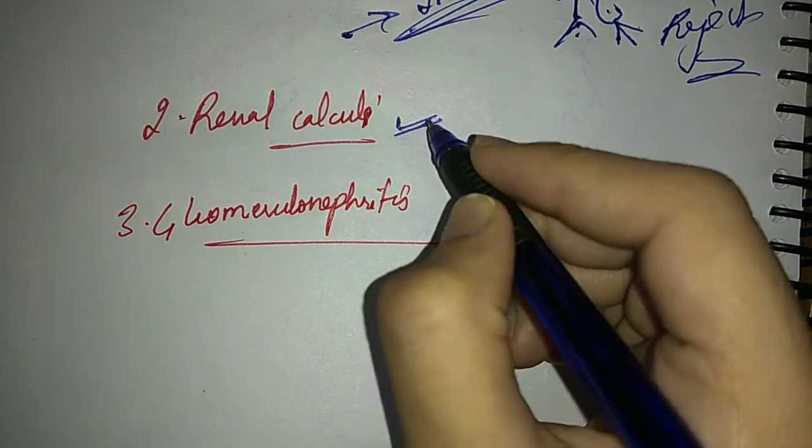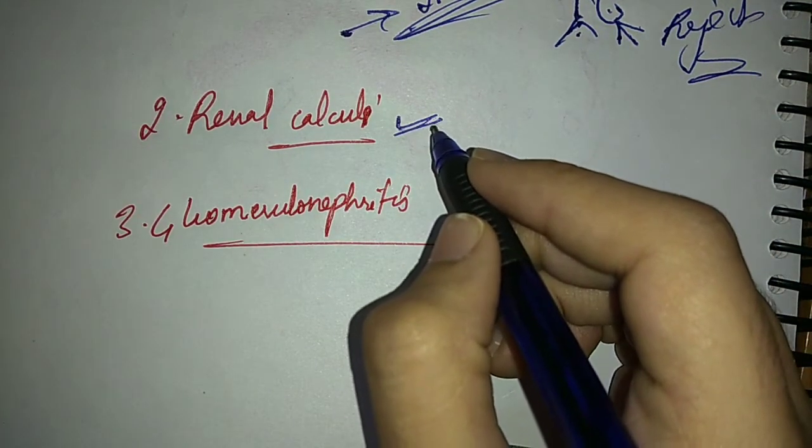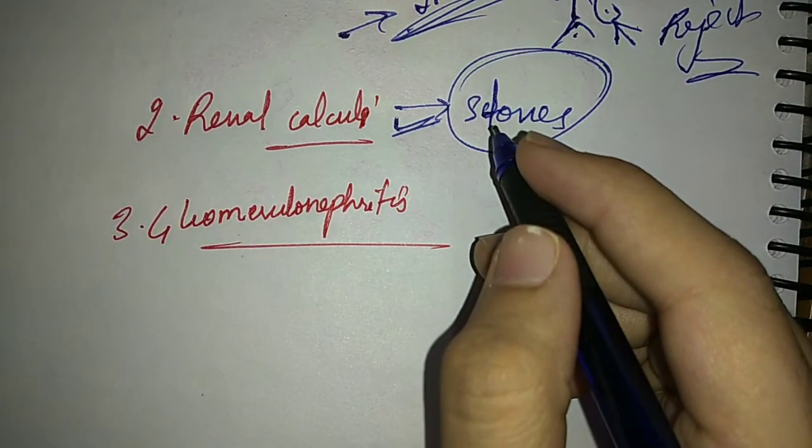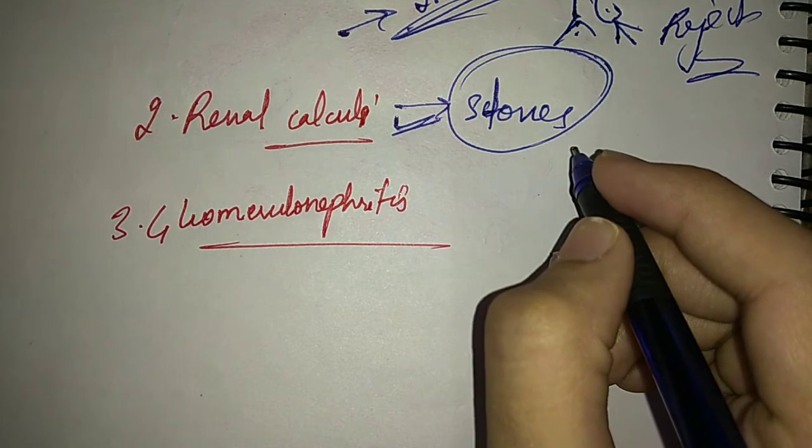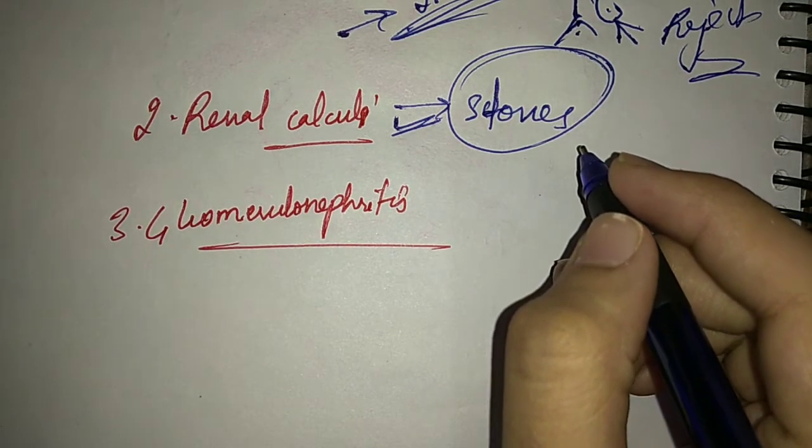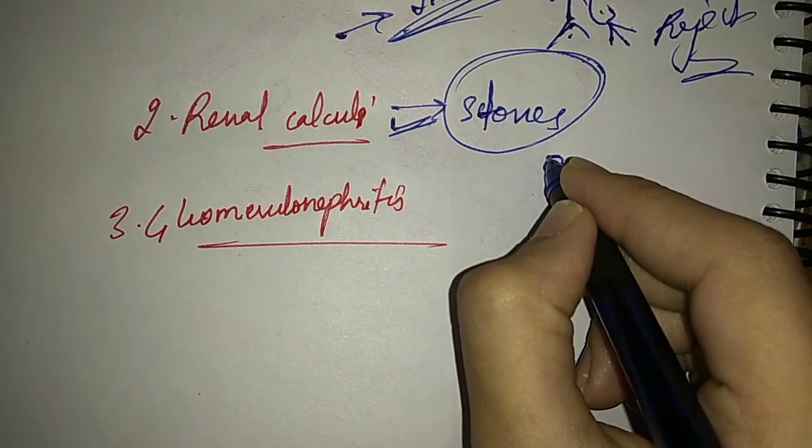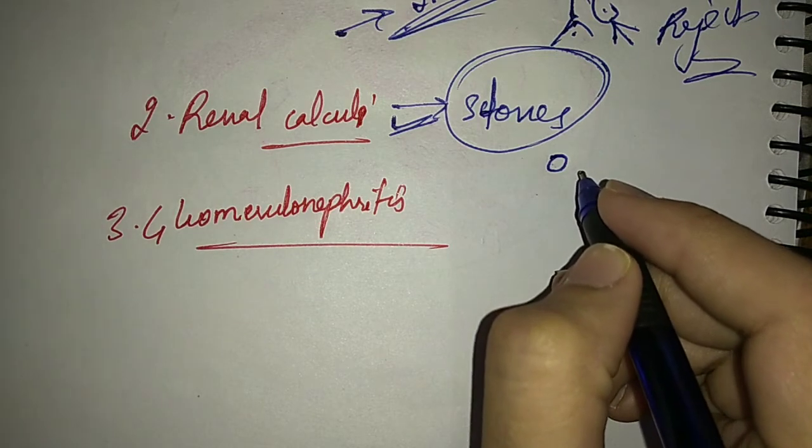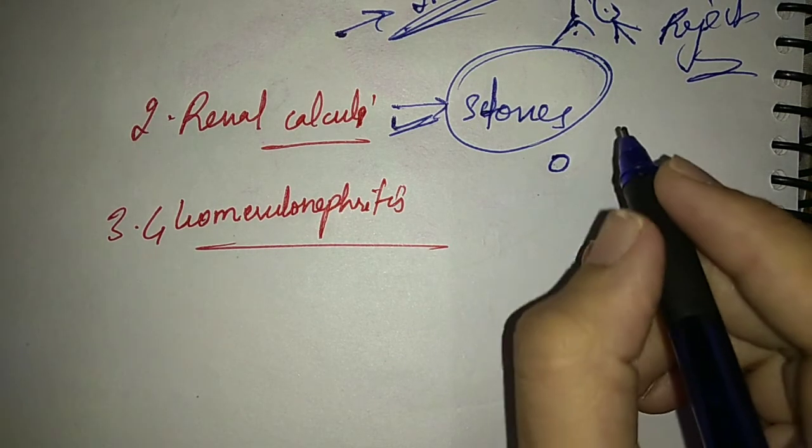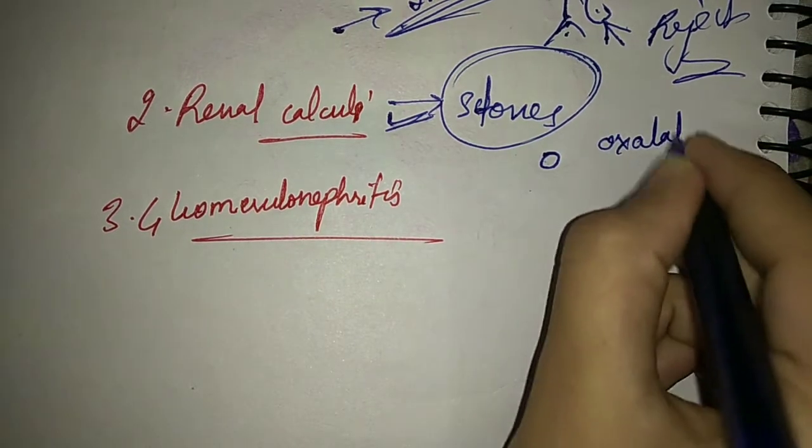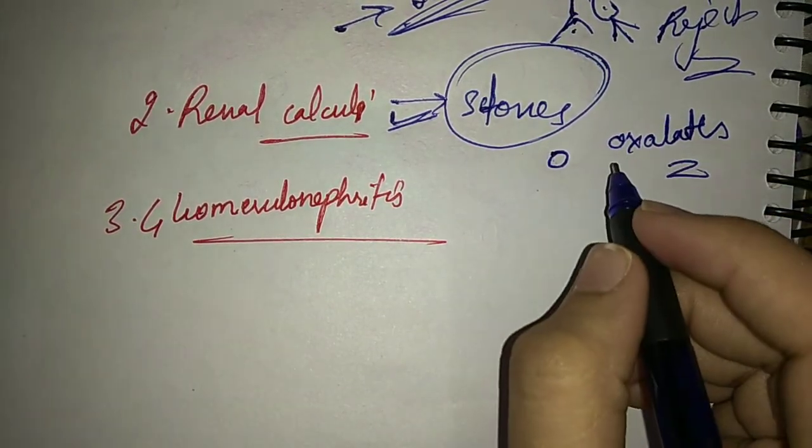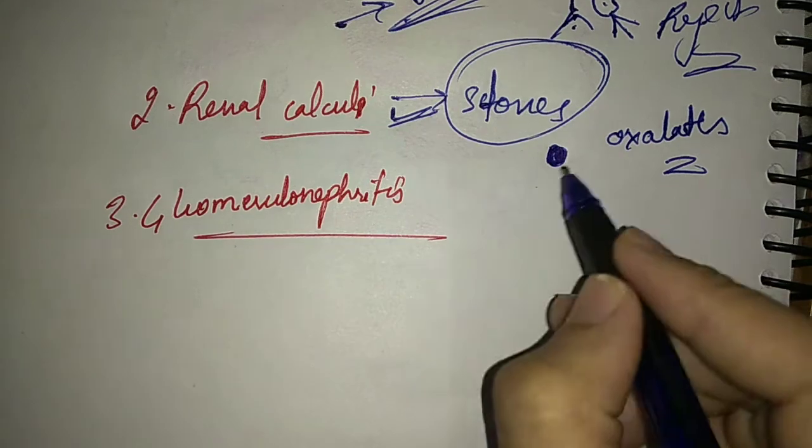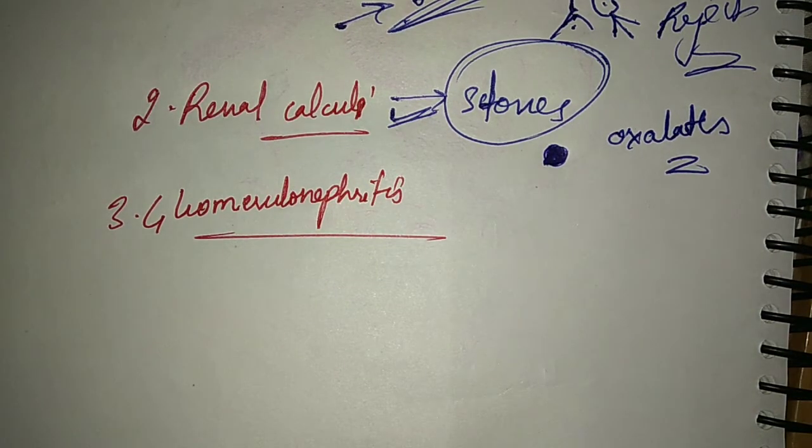Then the next disorder of the excretory system can be renal calculi. Renal calculi are the stones, kidney stones. The stones are the insoluble mass that the kidney cannot remove. They form stone-like structures. How are they formed? By crystallization of salts. The salts we consume from outside, from the food we eat which contains crystallized salts like oxalates, cannot be removed from the kidney and accumulate there, forming an insoluble mass or stone-like structure which we call renal calculi.